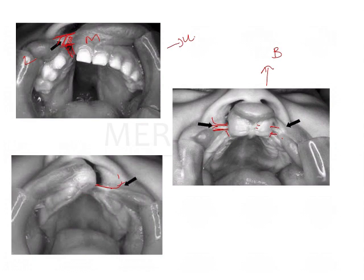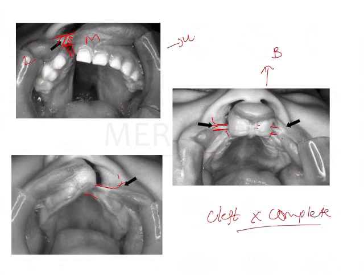The presence of these bands can sometimes interfere with the classification of the cleft, because some practitioners believe that the presence of the Simonard band means the cleft is not complete. Whereas other practitioners believe that whenever there is involvement of the alveolar segment, that cleft is complete — so even if a Simonard band is present, the cleft is still considered complete. This is an area of dispute between some clinicians.